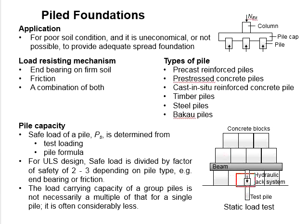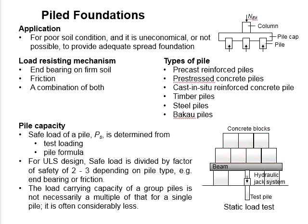The hydraulic jack will push the pile downward while the concrete blocks generate reactions to the force. From there, we are able to determine the pile capacity. Alternatively, you may use pile formulas to determine the safe load of the pile.